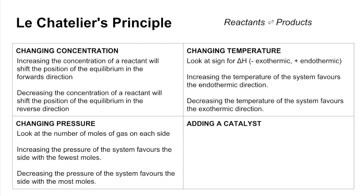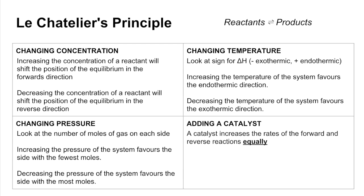One more point on pressure: if you have the same number of moles of gas on each side of the arrows, then pressure won't affect the position of the equilibrium. Adding a catalyst increases the rate of the forward reaction and the reverse reaction equally, so the net effect is that the position of the equilibrium won't be affected.